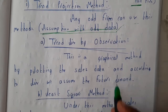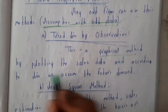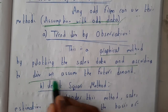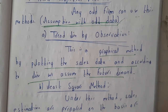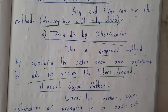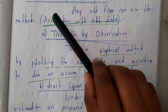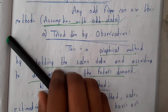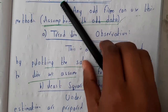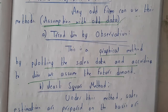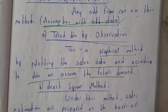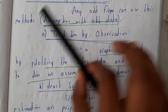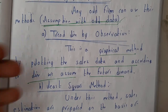Trend line by observation is a graphical method — by plotting the scaled data and according to the line we assume our future. If the line is increasing every year by 0.5, we assume it will increase by 0.5 this year too. If it is doubling, we assume it will also double this year.